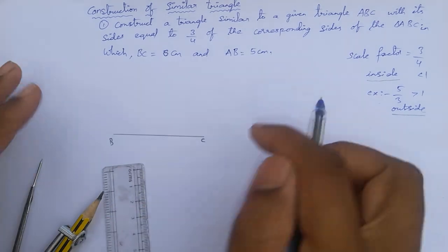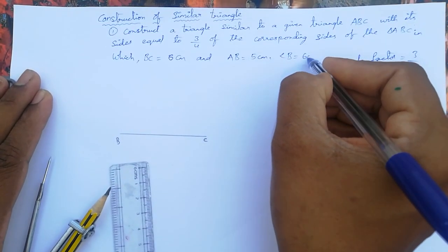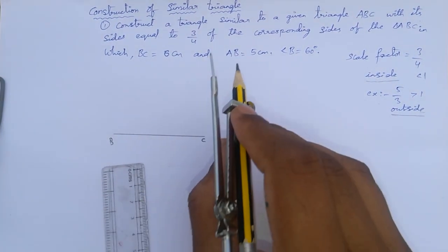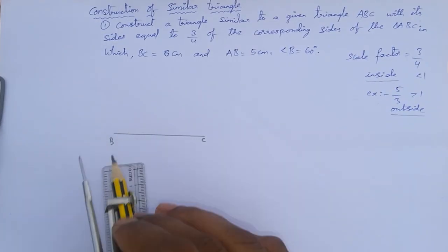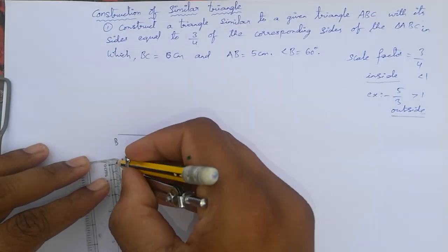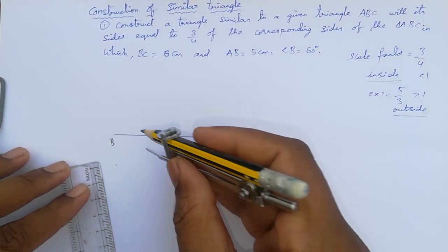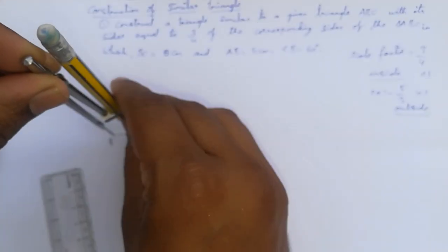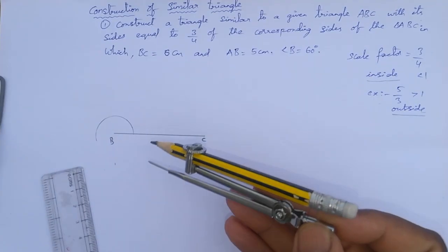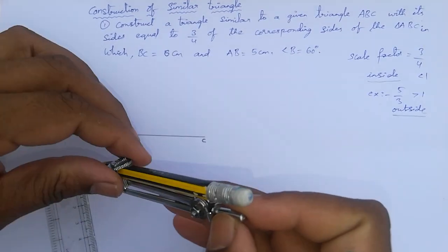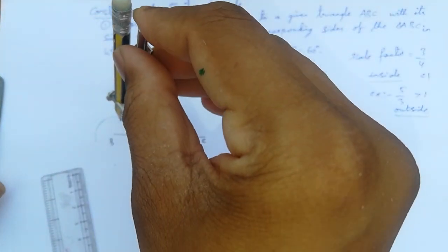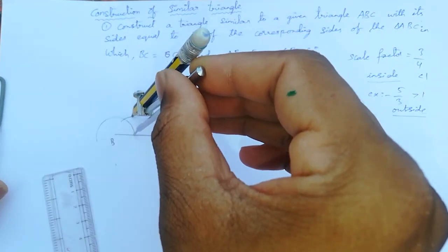Angle B is 60 degrees. Before drawing AB of 5 centimeters, we need to mark B at 60 degrees. To draw the 60 degree line, take some length — say 1 or 1.5 centimeters — and draw an arc. Then from that same length, draw another arc. This arrangement gives 60 degrees.